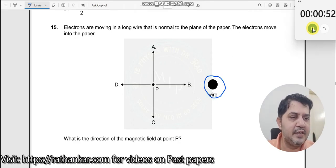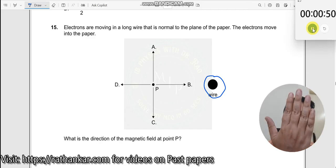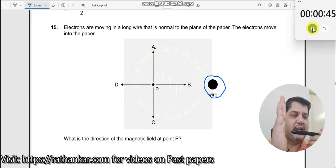So, this is the wire which is given here and if suppose if this is the paper, this is the paper over here, now the electrons are moving in this direction, inside. It is going inside over here.